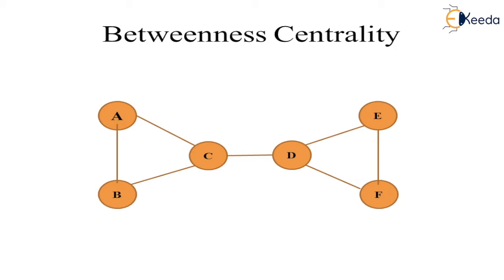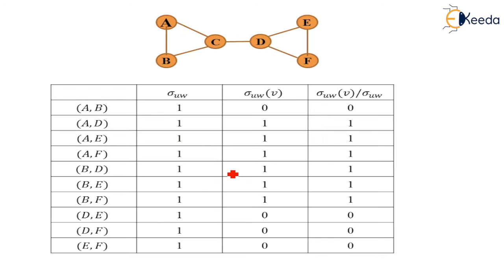Let's understand it by numerical. We have this given graph and we have to find out the betweenness centrality. Now let's consider this C point. First of all we can understand all the possible edges. A,B exists. Is it passing through C? We are trying to find out the betweenness for C. No, direct edge is there so it is not going through C. We will be writing 0 for exists 1.